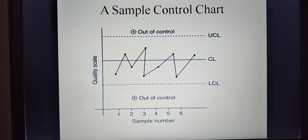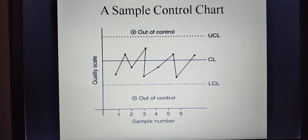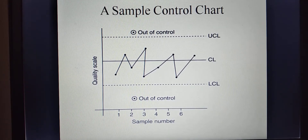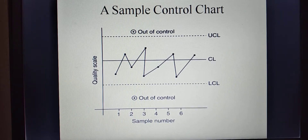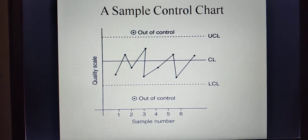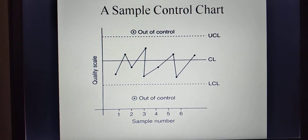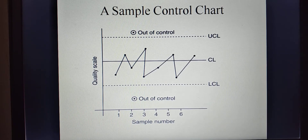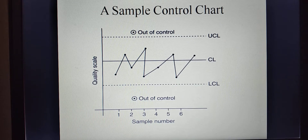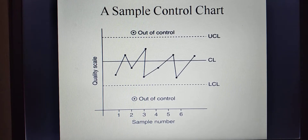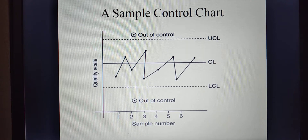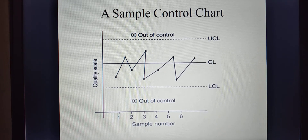If above UCL there is one point, it is marked as out of control — which means if any single point falls above UCL, the process is said to be out of statistical quality control. Similarly, if below LCL there is one point, that is also marked as out of control. So the conclusion is: if any one point falls below LCL, then the process is also said to be out of statistical quality control. No need to have both — one above UCL and one below LCL. If any one single point is either below LCL or above UCL — that is, outside the control limits — then the process is said to be out of statistical quality control.